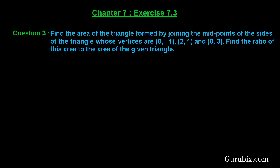Welcome friends. Here is a very important question from an examination point of view. This is question number 3 of Exercise 7.3 of Chapter 7. The question says: find the area of the triangle formed by joining the midpoints of the sides of the triangle whose vertices are (0, -1), (2, 1), and (0, 3). Also find the ratio of this area to the area of the given triangle.